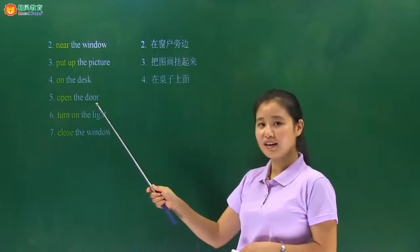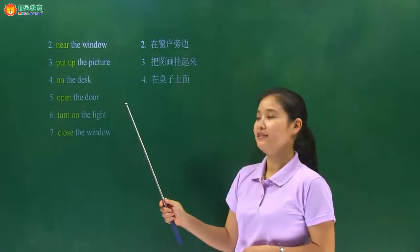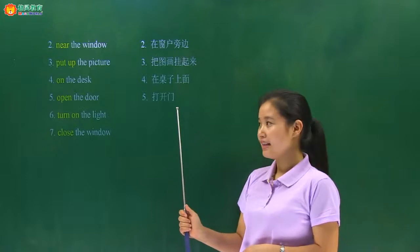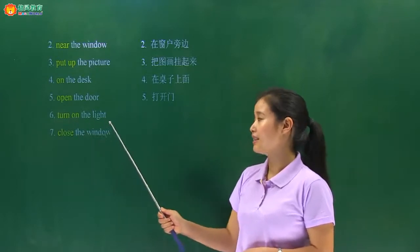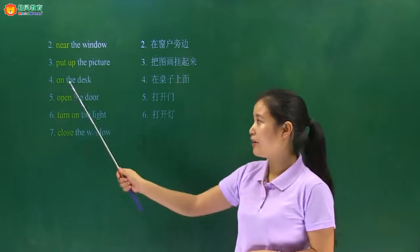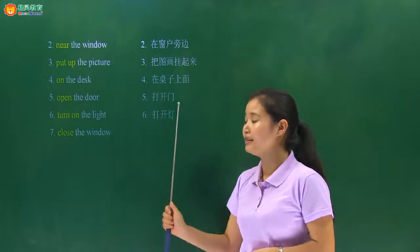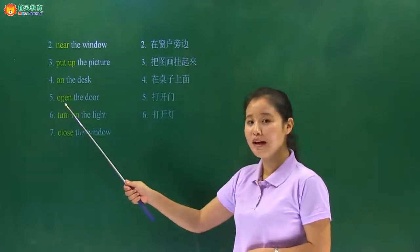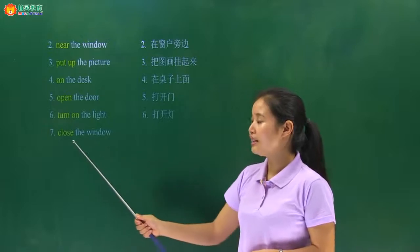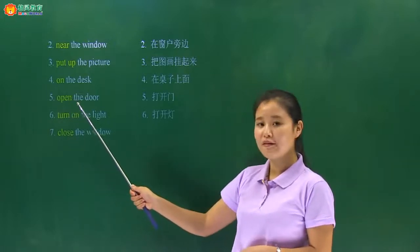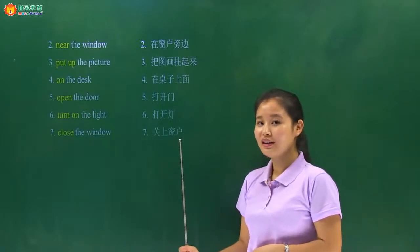Next one，open the door，open 打开，open the door，打开门。第六个，turn on the light，打开灯。这两个都是表示打开，但打开的对象不一样：开门用 open，开灯用 turn on.